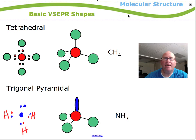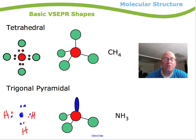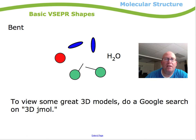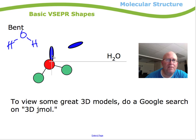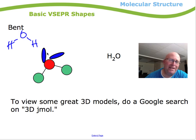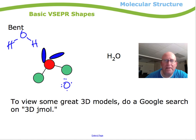One last example, and then we'll look at some implications of these VSEPR structures. The last one is water. We know water looks like this — so why is it bent? Here I have my oxygen atom, two hydrogens, and also lone pairs of electrons. It's these lone pairs of electrons that affect the shape of water.